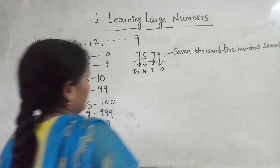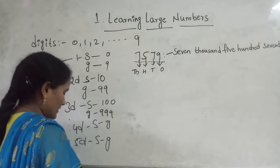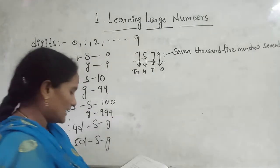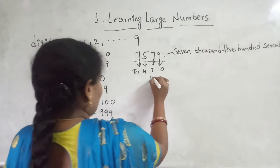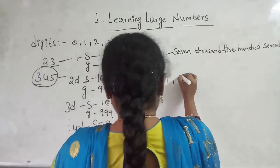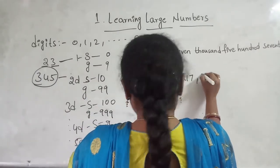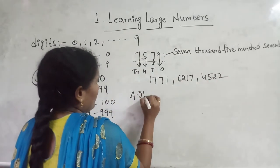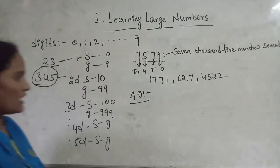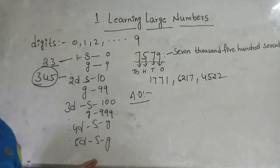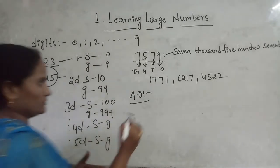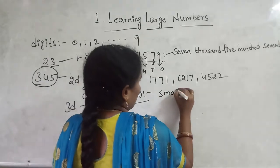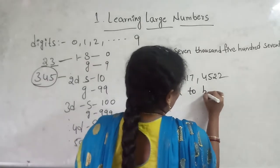Okay. Now, next, I given one series. We are writing in ascending order and descending order. First, what means of ascending order? Ascending order means smallest number to biggest number.